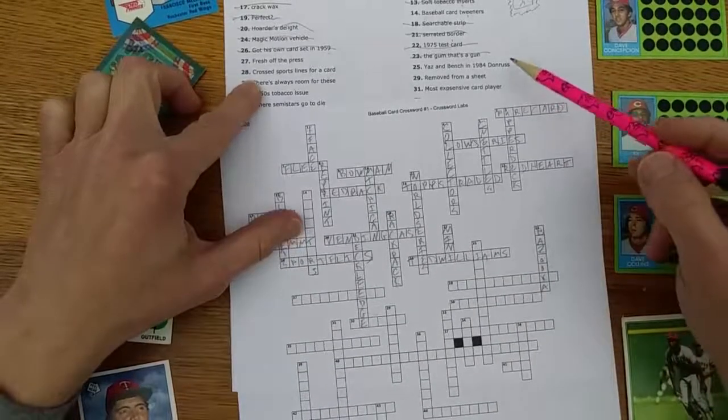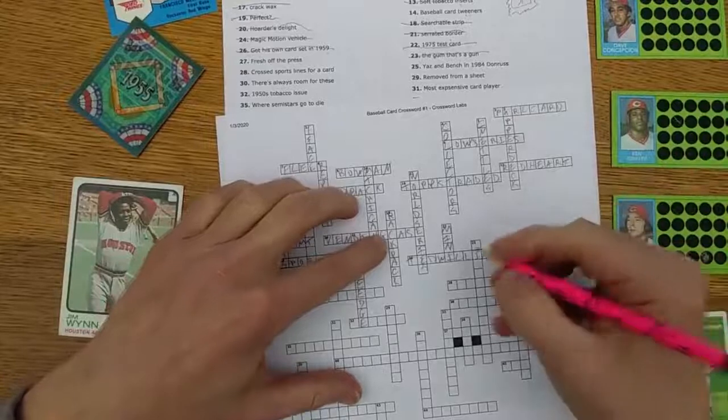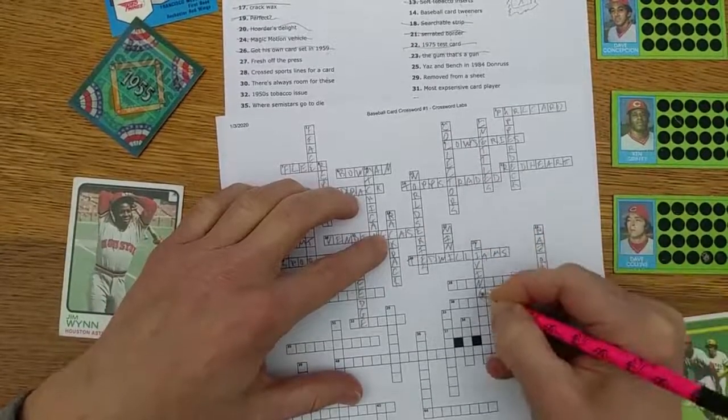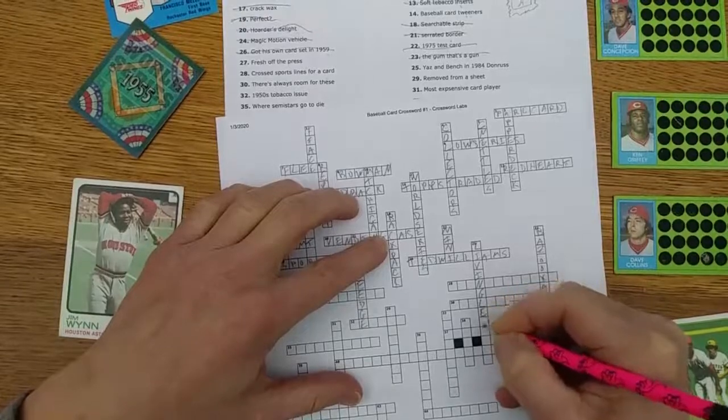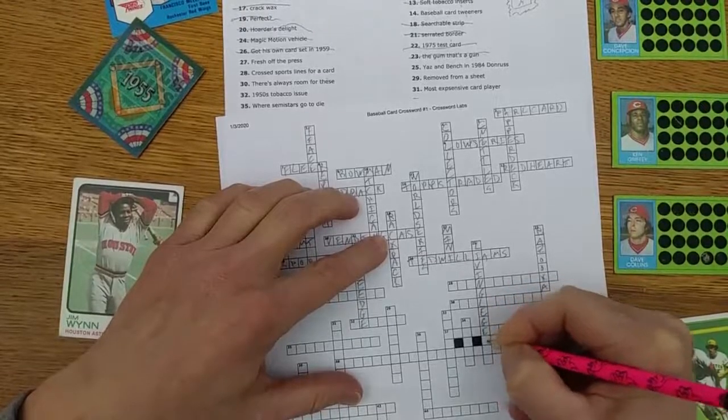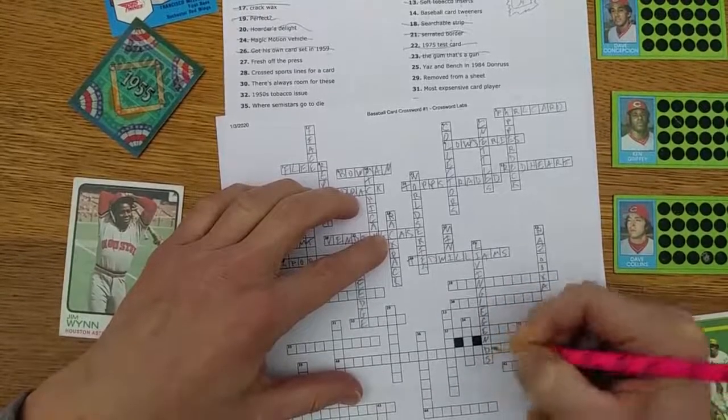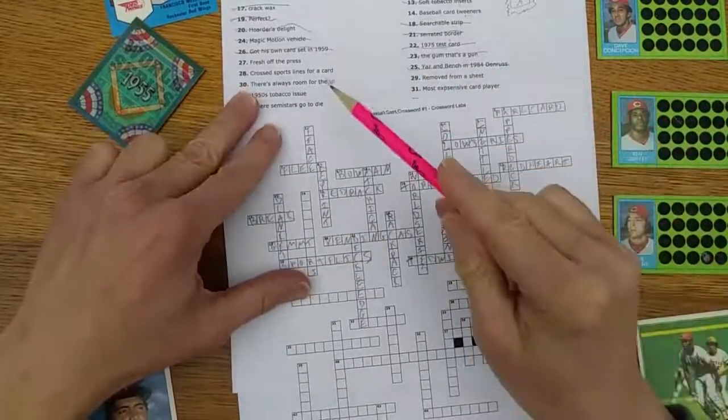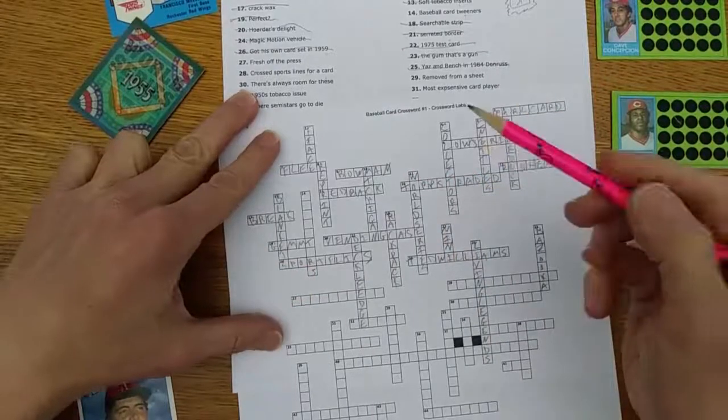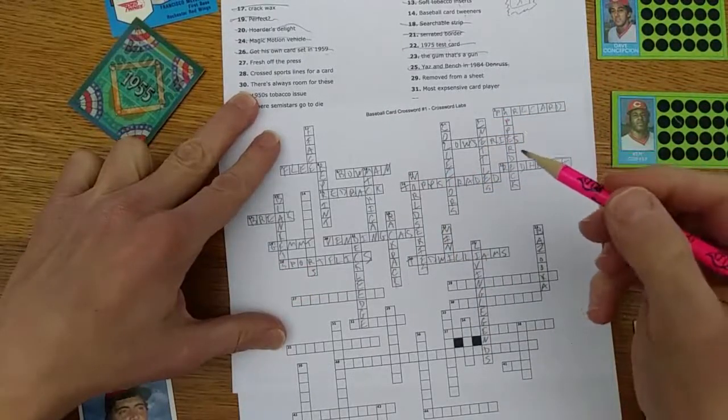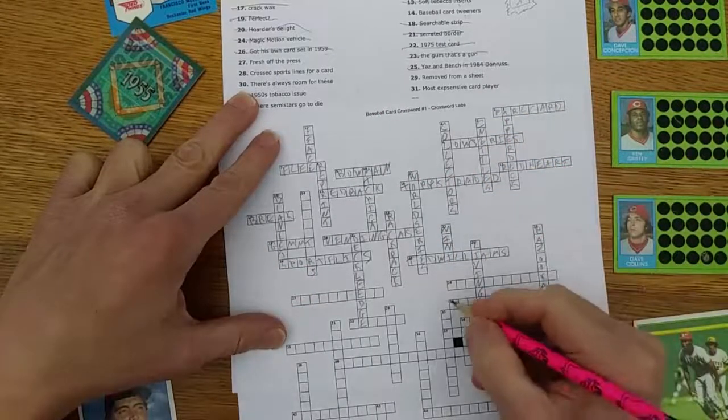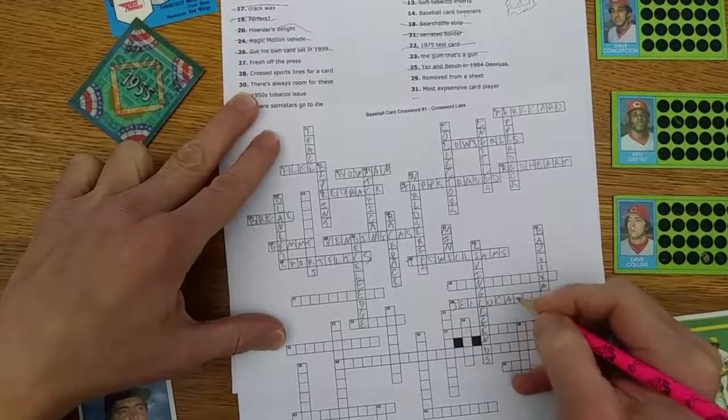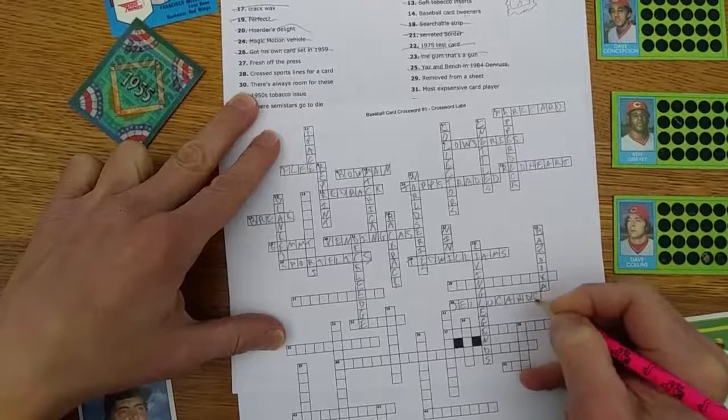So he hasn't been in 1984 Donruss, 25 down. They were on the same card together. It was a great card. I remember pulling it from a pack, and they were living legends. One was on top, one was on bottom. Can't remember who was who. 30 across: There's always room for these. It's gonna be jello cards. There's always room for J-E-L-L-O, and there's always room for C-A-R-D-S.